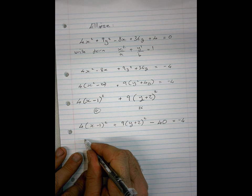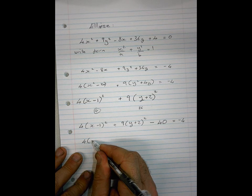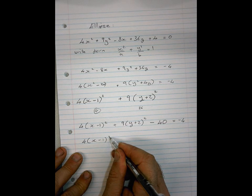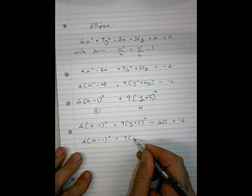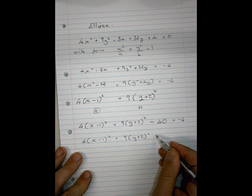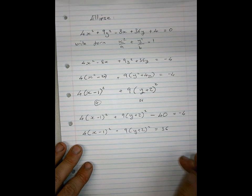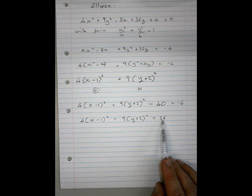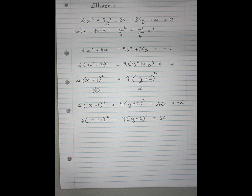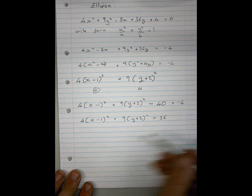So very nicely now, watch, this comes out really good. (x - 1)² + 9(y + 2)² = 36. Okay. I told you it was an ellipse. In order to get an ellipse, this has to be 1, so we divide everything by 36. Okay.